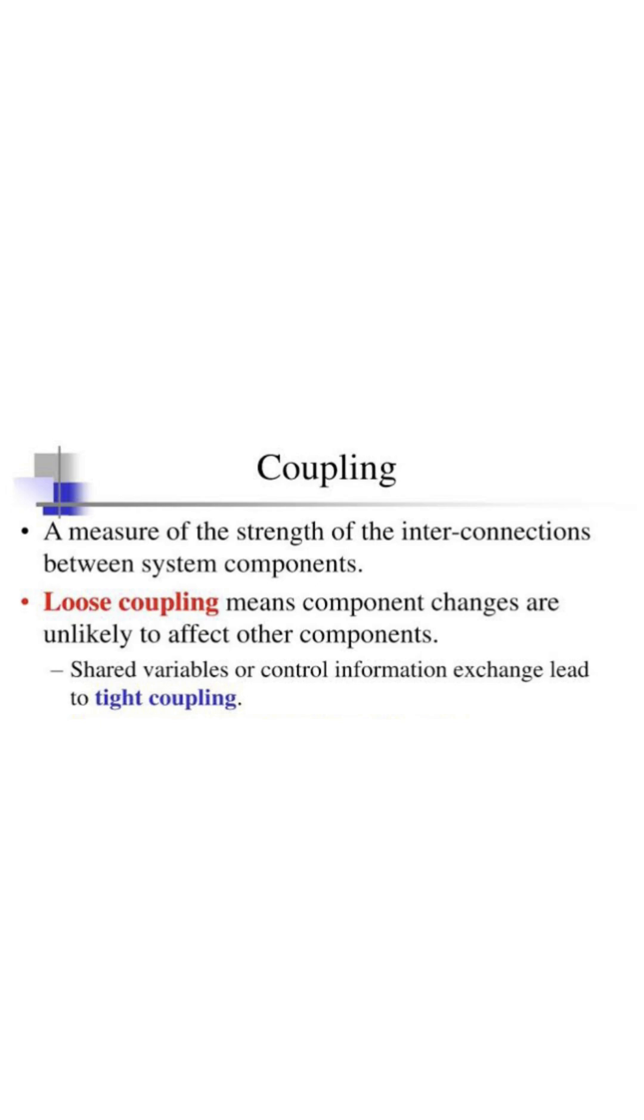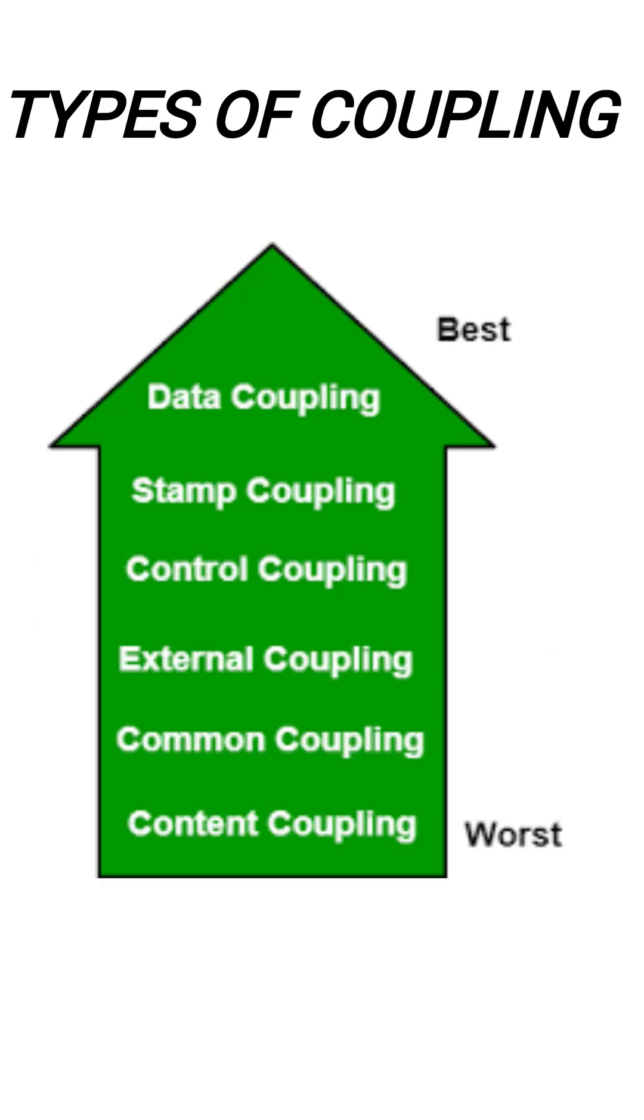Low coupling is the aim here. These are the types of coupling, data coupling being the best and content coupling being the worst. So these are the different types.